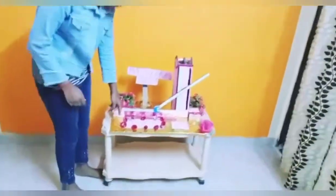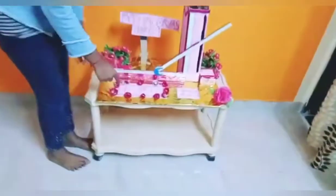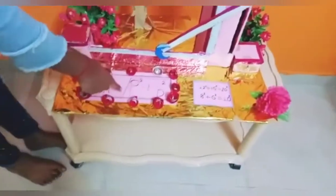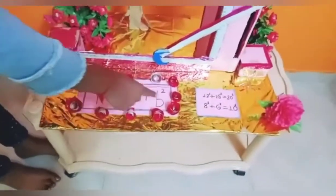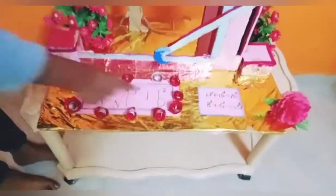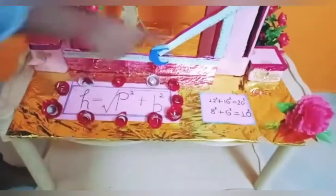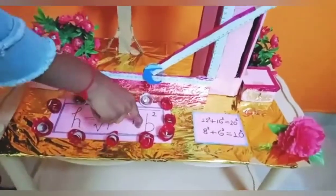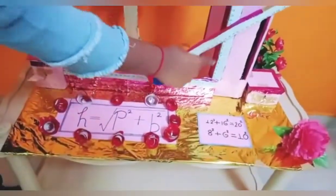The formula of the Pythagoras theorem is h is equal to the root of p squared plus b squared. Here h is the hypotenuse, p is the length, and b is the height of the triangle.